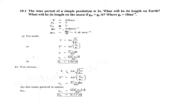Using the same process for the Moon, we use LM and GM. We get the answer LM is equal to 0.17 meters.